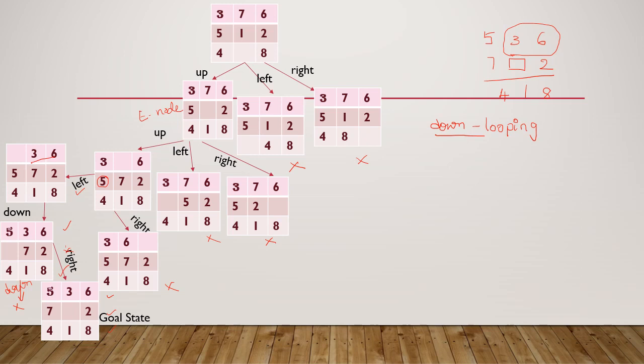Now let us see the problems the machine would face. With our intellect we decided which path lengths would be more and which states were not promising. But the computer will not have this kind of intellect, so we must train the machine — this is the problem with the non-heuristic approach. We will try to overcome this in the heuristic approach. That's it for today's video, thank you.